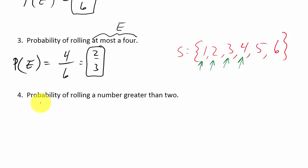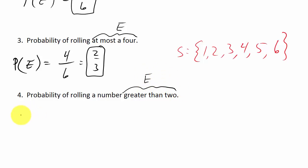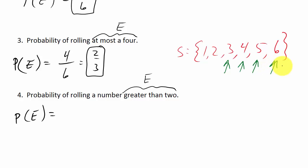What about the probability of rolling a number greater than 2? We call that event E. Greater than 2 means 2 is not included, so we want 3, 4, 5, and 6. That's 4 successful outcomes over 6 possible outcomes, which gives us 2 thirds.